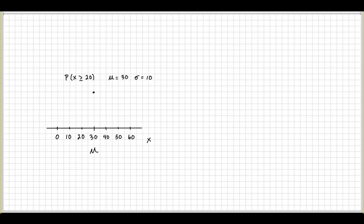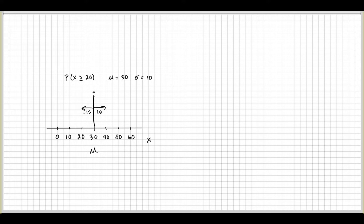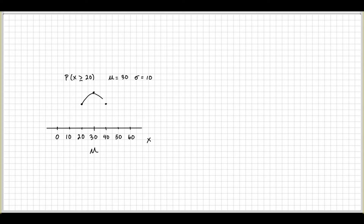We have this curve, and somewhere it bends — that's an inflection point. Where is that point? It's one standard deviation away from the mean. One standard deviation to the right and to the left is 10 away from 30. So you draw a dot around 40, and another dot around 20, symmetrically.